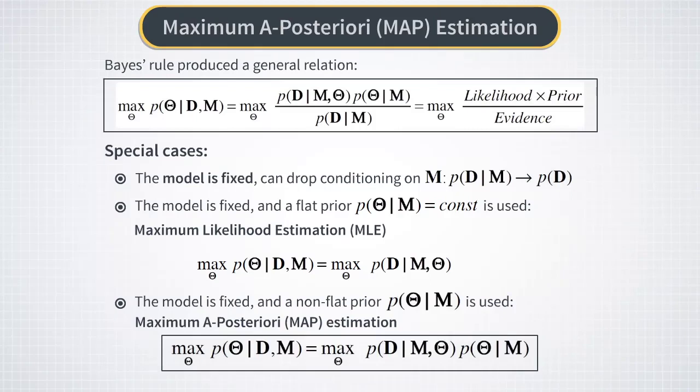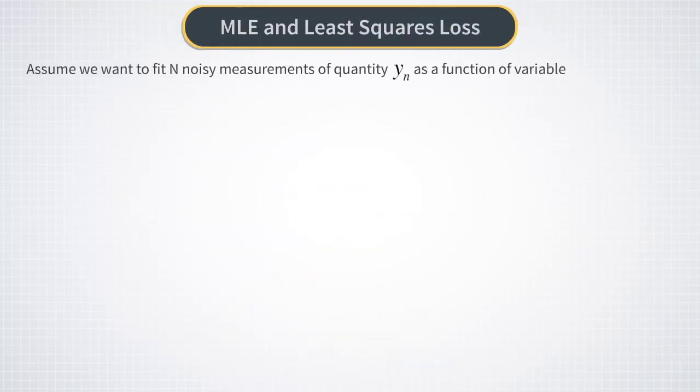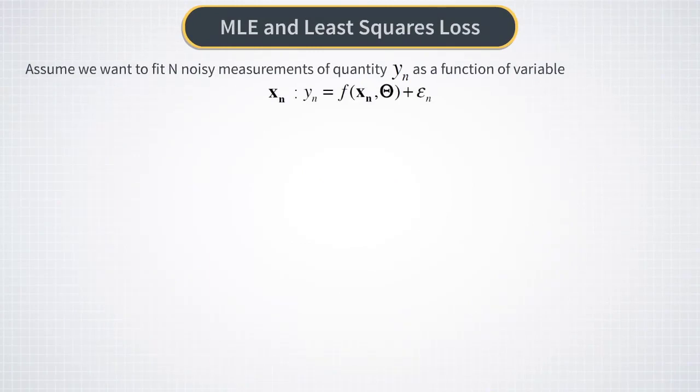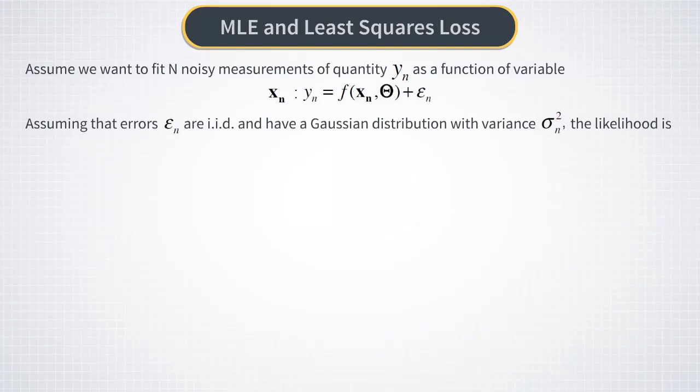Let's now come back to the MLE method and consider a specific example. Let's assume we model a real valued quantity Y as some function F of predictors X plus a noise. Your function is parameterized by parameters theta and you want to fit these parameters to some training data. Now let's assume that all errors epsilon are independent Gaussian random variables with zero mean and variance that can in principle depend on the input. This means that each observation is independent and the probability to see all data is just a product of probabilities to see each point. This gives you this relation.